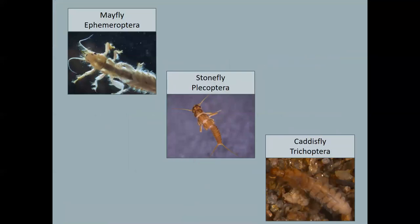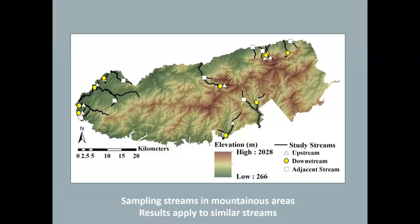Indicator taxa, mayflies, stoneflies, and caddisflies were identified for this study. This occurred in Great Smoky Mountains National Park. This was part of a larger study. So all of the points were not considered in this study. Note the yellow downstream. This is downstream from a hemlock forest. And so all of the yellow spots are where the data is taken from. And this is located throughout the National Park.